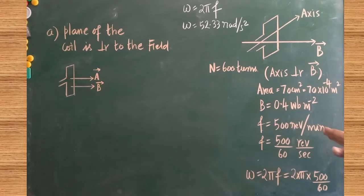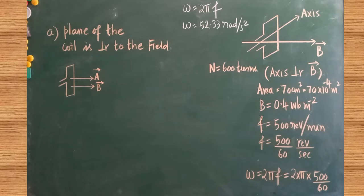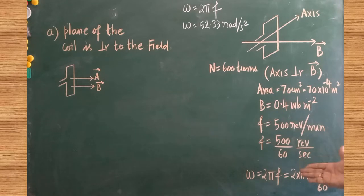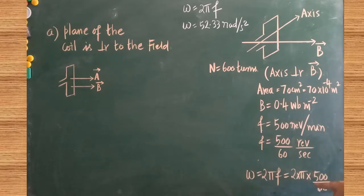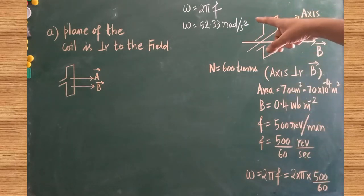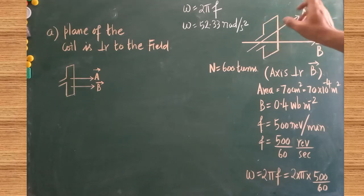The number of revolutions per minute is given — the coil rotates at 500 RPM, which must be converted to revolutions per second: 500 divided by 60. From that, frequency f is calculated, and then angular frequency omega equals 2πf — that is, 2 × π × (500/60). The angular frequency omega comes out to 52.33 radians per second.